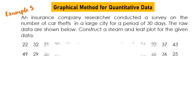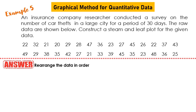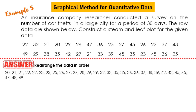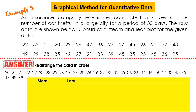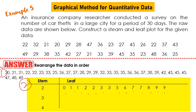Example 5: rearrange the data in order. The data arranged in order is: 0, 1, 1, 2, 2, 3, 3, 3, 5, 6, 7, 7, 7, 8, 9, 9, 9. Step 1 is to rearrange the data in order, then Step 2 follows.